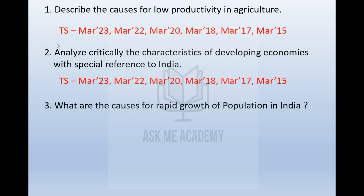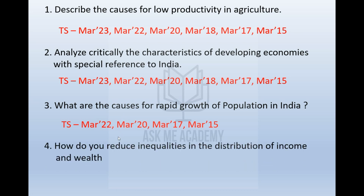The third question is: what are the causes for rapid growth of population in India? This has been asked 4 times. The next question is: how do you reduce inequalities in the distribution of income and wealth? This has also been asked 4 times. These 4 are very important questions — the chances of getting at least 2 in the next exams are very high.